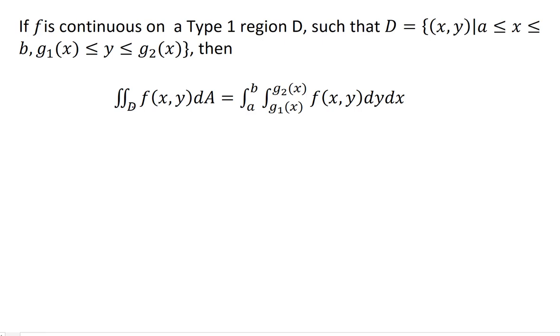...is less than or equal to G sub 2 of X, then the double integral over D of F(X, Y) dA equals the integral as X goes from A to B, the integral of G1(X) up to G2(X) of F(X, Y) dY dX. So I think it's helpful to look at an example and then we'll really understand what's going on here.